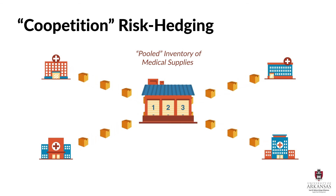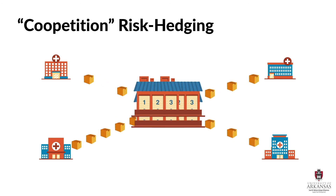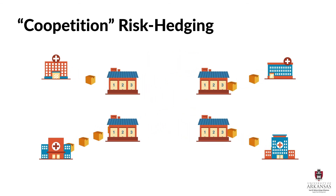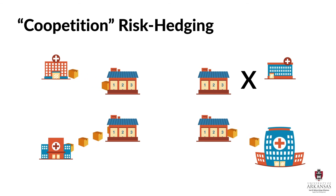Aggregation suggests that demand variability is reduced by accumulating demand across locations or products. Aggregation also allows high demand in one location to be offset by low demand in another. Imagine if each hospital had its own distribution center with its own inventory — one hospital would likely have too much of an item, and another would not have enough. But because they did not share the risk, they could not offset each other. As a result, one hospital might run out of a needed item that could cost somebody their life.